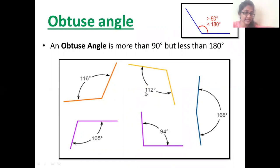And the third type of angle, that's an obtuse angle. This measures more than 90 degrees but less than 180 degrees. As you can see here, 116. That's lying between 90 to 180 degrees. Okay, so that's an obtuse angle.